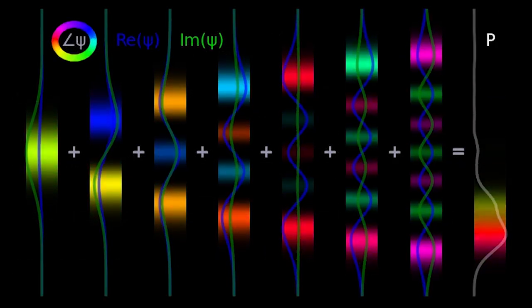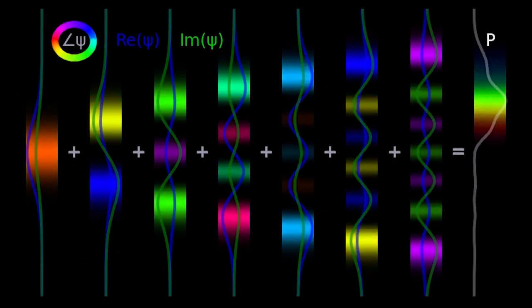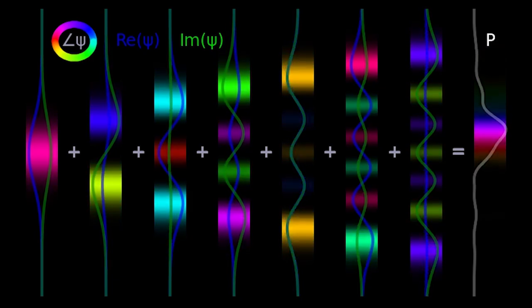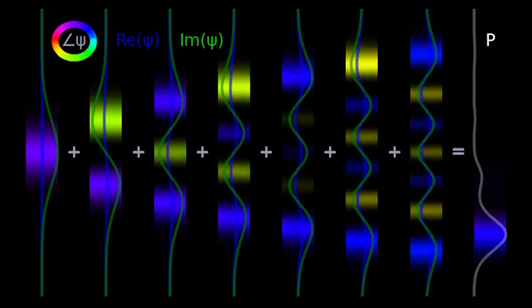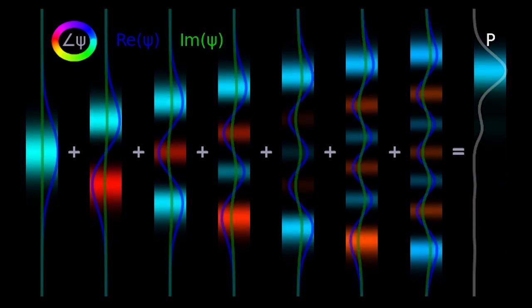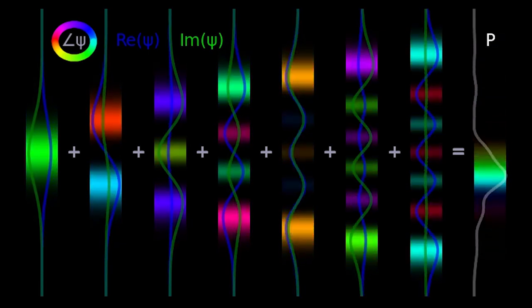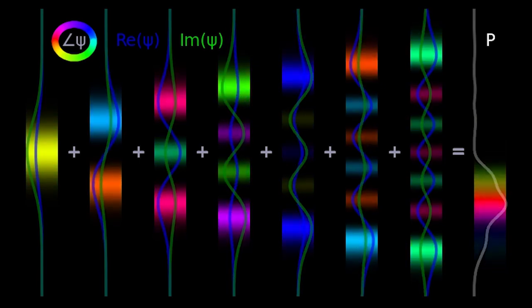Well, hey, so there you have it. That's sort of a conceptual overview of the quantum harmonic oscillator. Didn't go into too much depth, but I hope this gave you a sort of a sense of the gestalt of the system. And I hope that now you have some more intuition when people talk about quantum harmonic oscillators. Now you kind of know what they mean.